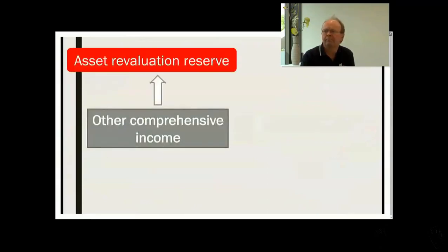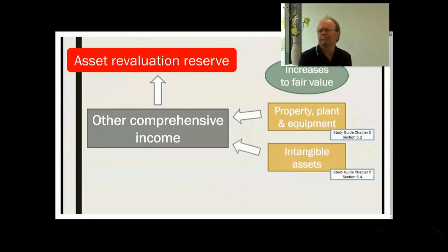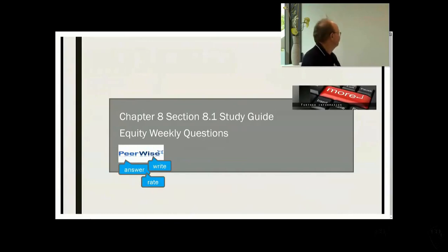Reserves can be set up based on transfers directly to equity from other comprehensive income, or from transfers from retained earnings. An asset revaluation reserve is a reserve many firms can have — it represents increases to fair value of property, plant and equipment, or of intangible assets when we revalue them to fair value. For further information on two parts of equity, go back to chapter 8, section 8.1 in the study guide, and also review the equity weekly questions. Answer, write, and rate questions on equity in PeerWise.